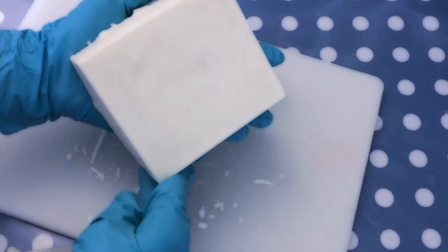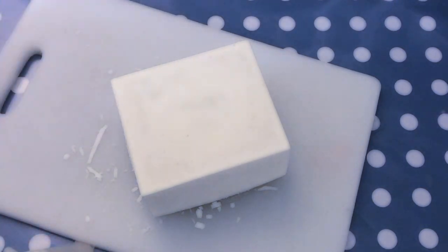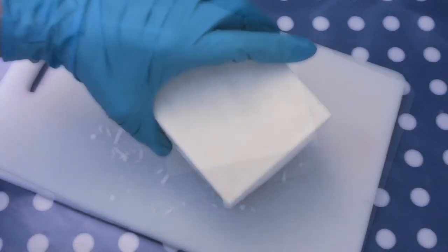This specific recipe here makes a very hard bar of soap. What you can do is you can take a cheese grater and grate it in small flakes. And then you can comfortably add it to your laundry.